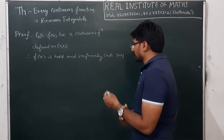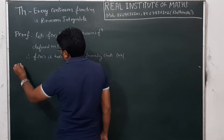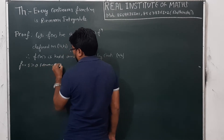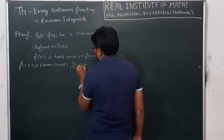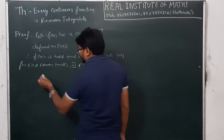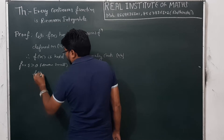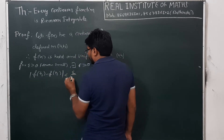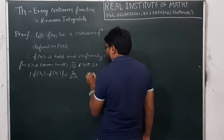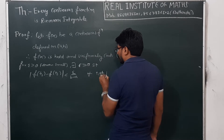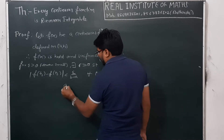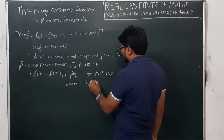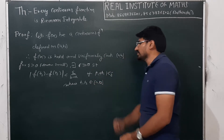If this function is uniformly continuous, then by the definition, for epsilon greater than 0, however small, there exists some delta greater than 0 such that |f(t₁) - f(t₂)| is less than epsilon over (b minus a), and this holds for all t₁, t₂ belonging to the interval [a, b]. This is the definition of uniform continuity.